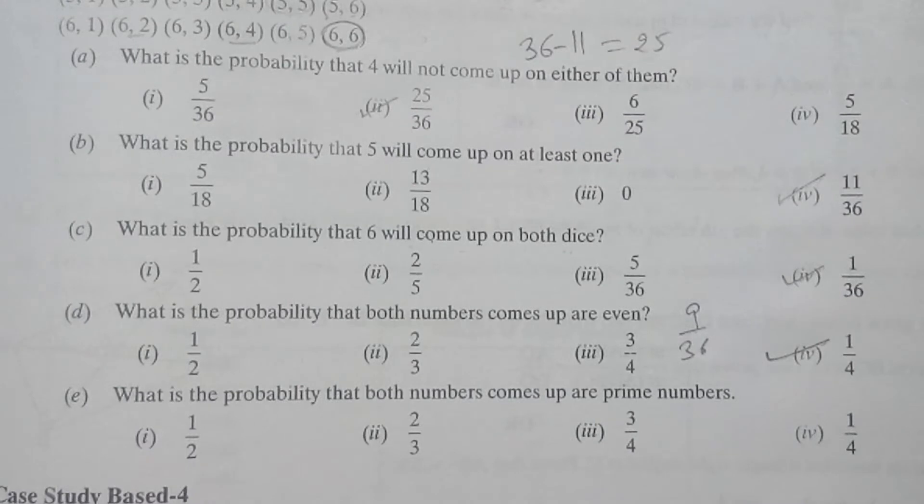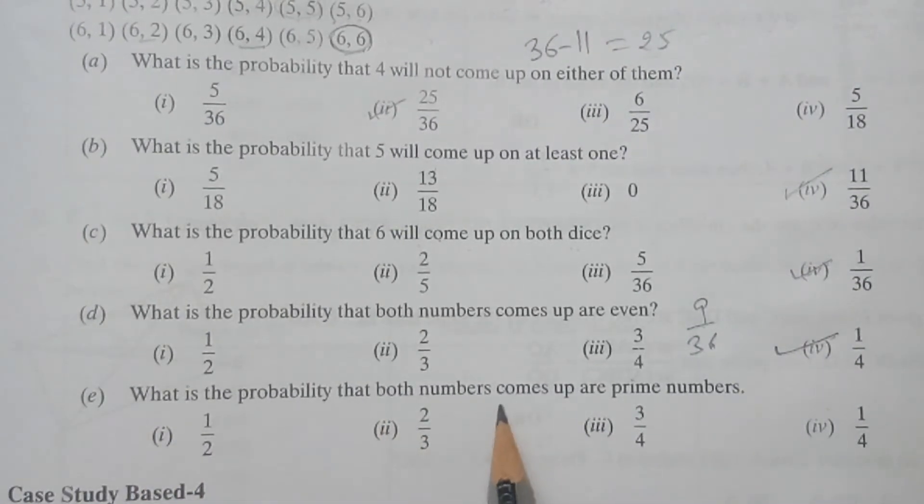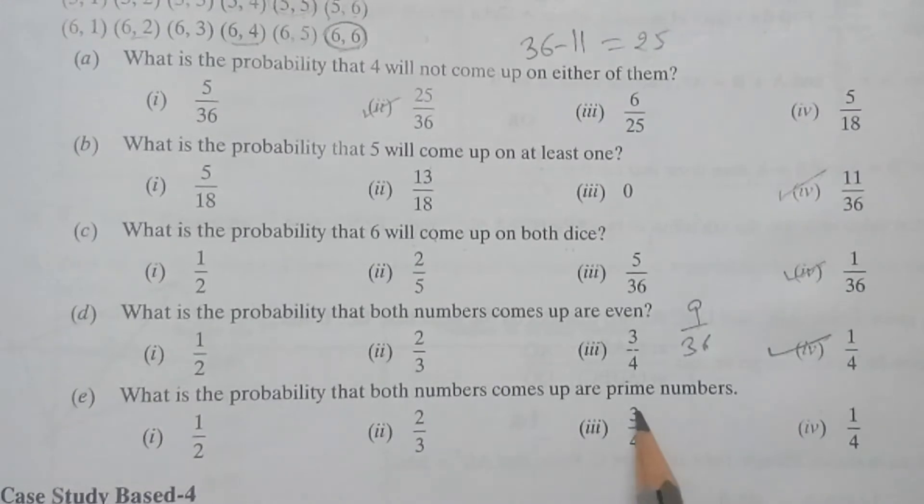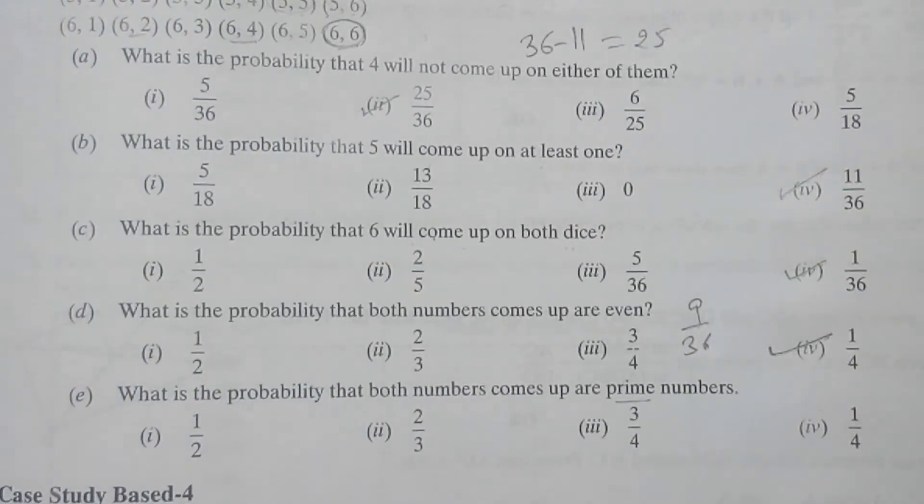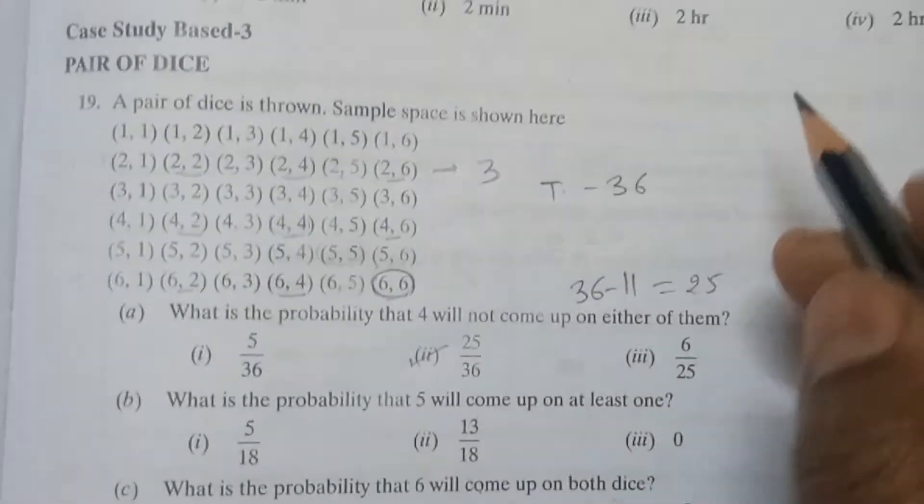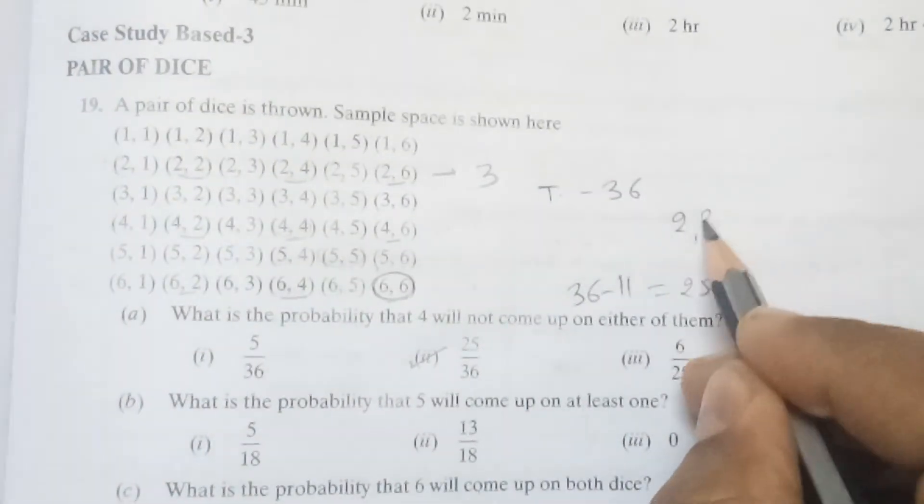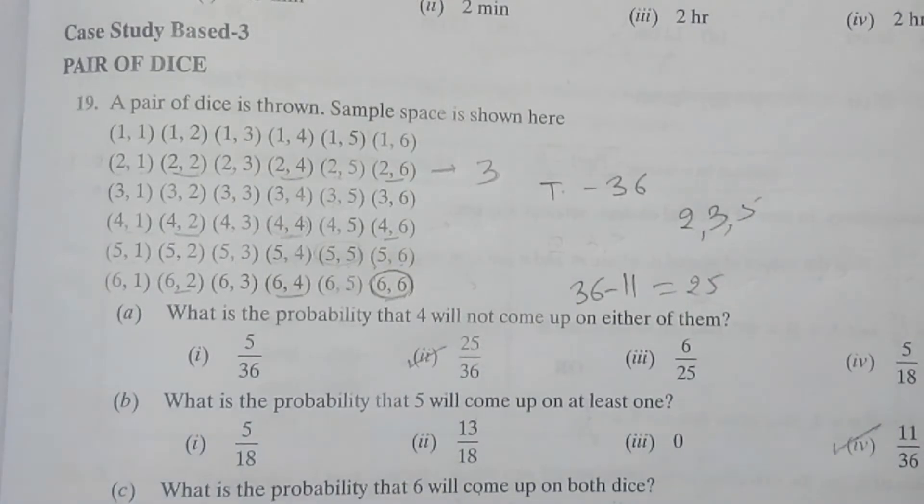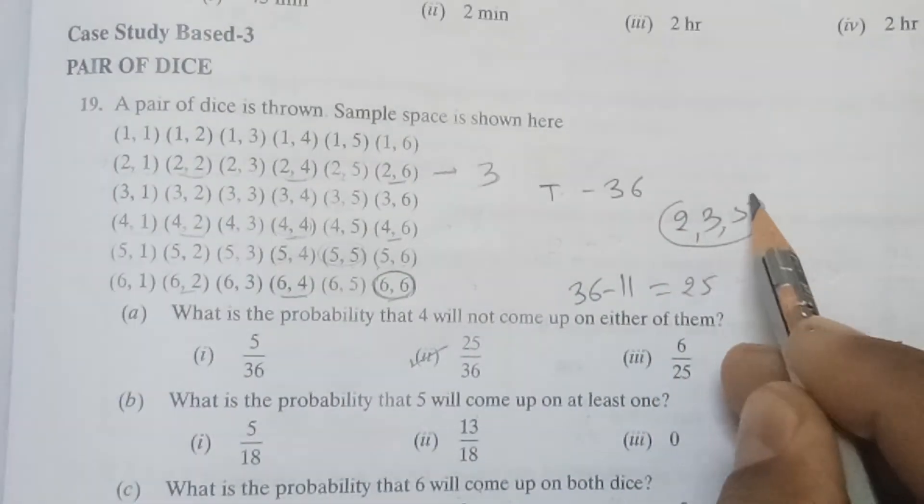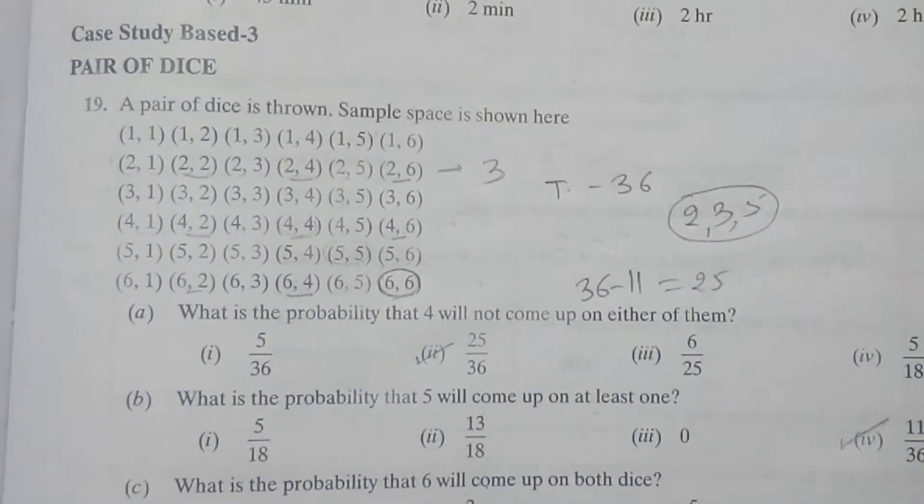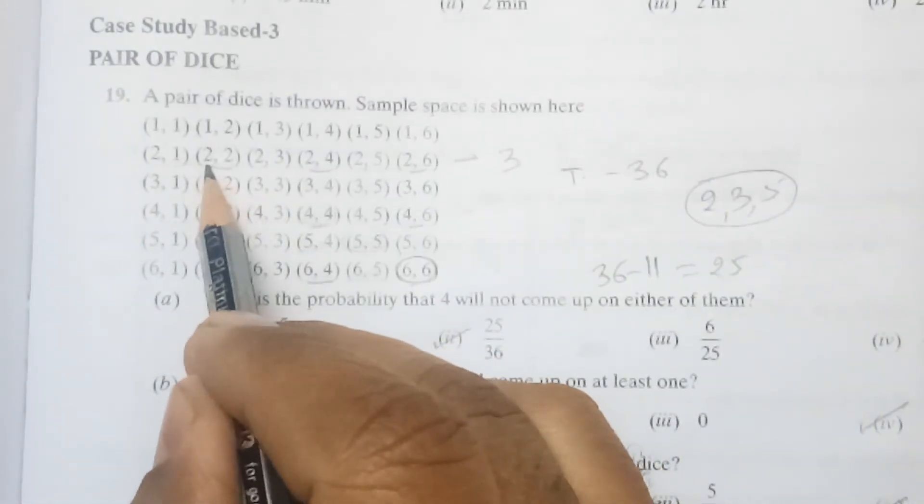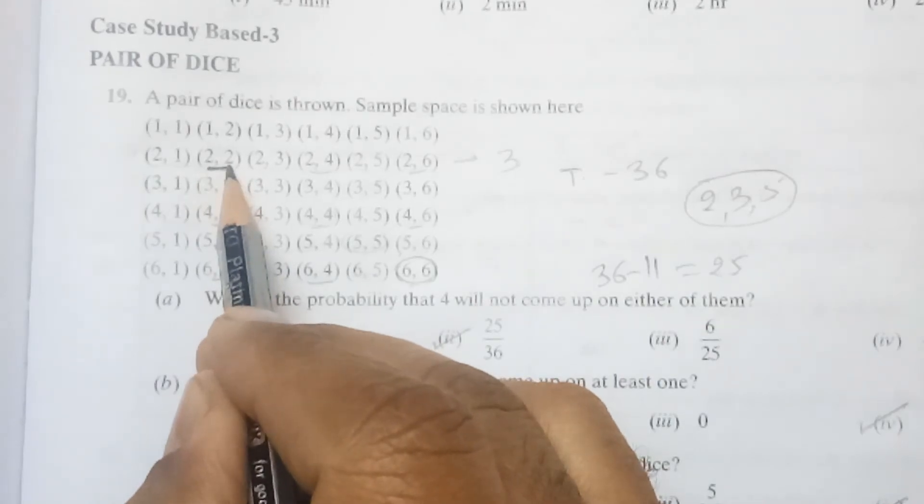Last part is: What is the probability that both the numbers come up to be prime numbers? So now let us see what are the prime numbers first. Prime numbers are 2, 3, and 5 which are coming from 1 to 6. So we will check the combination where 2, 3, and 5 are coming. So here you can see (2,2) - this pair is prime number.